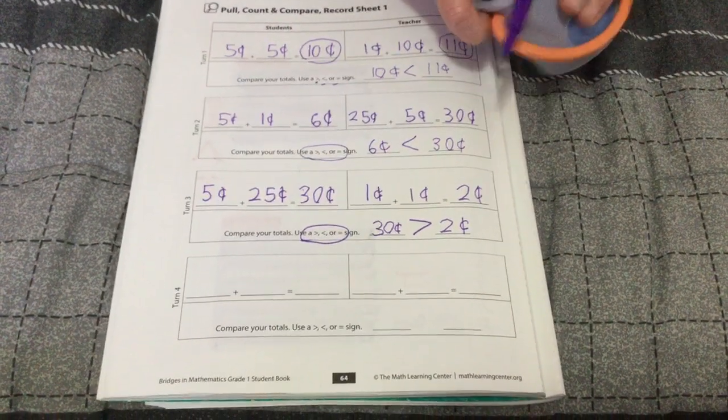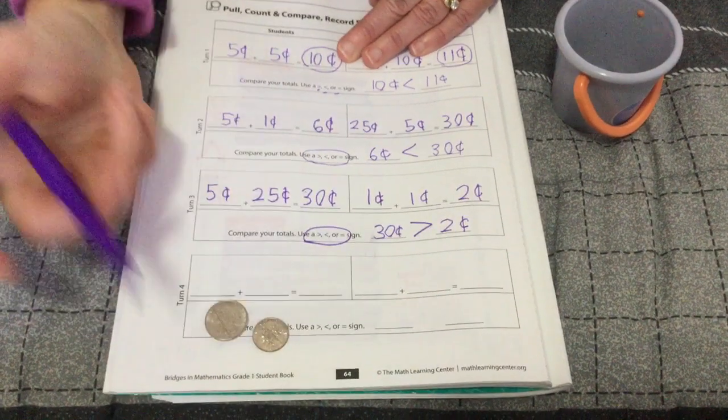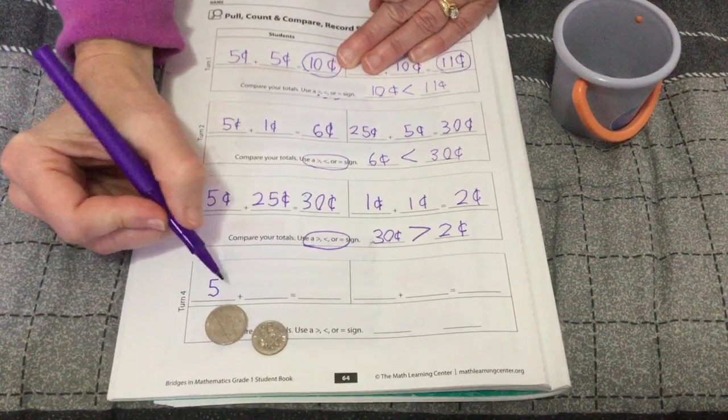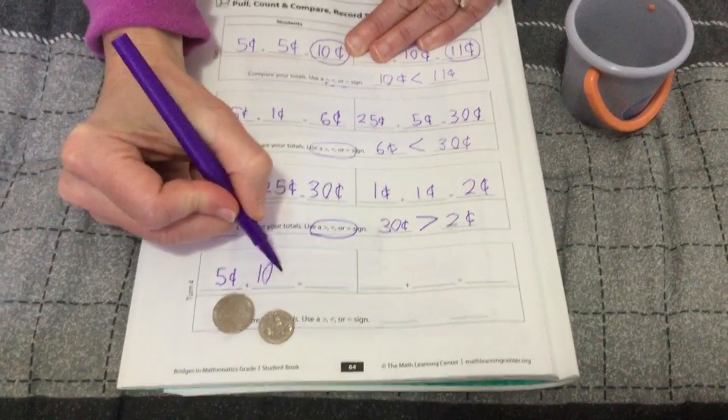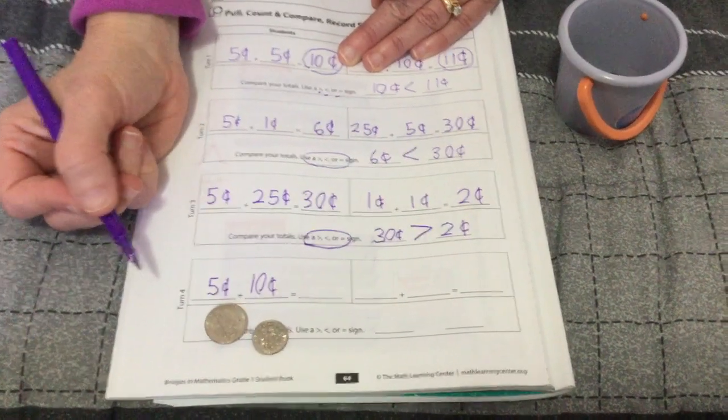One more. We haven't done this combination before. Five cents plus ten cents. Sometimes friends, I like to think of it the opposite way.